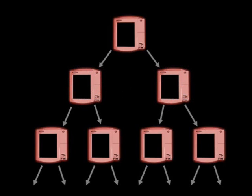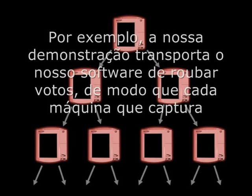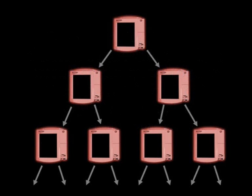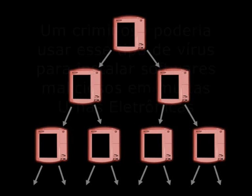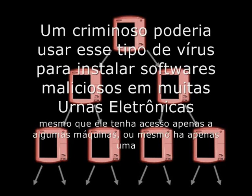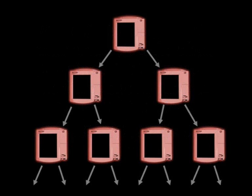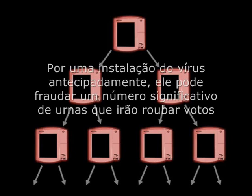For example, our demonstration virus carries our vote-stealing software, so that every machine that catches the virus will steal votes. A criminal could use this kind of virus to install malicious software on many voting machines, even if he has access to only a few machines, or even only one. By planting a virus far enough in advance, he can ensure that a significant number of machines will steal votes on election day.